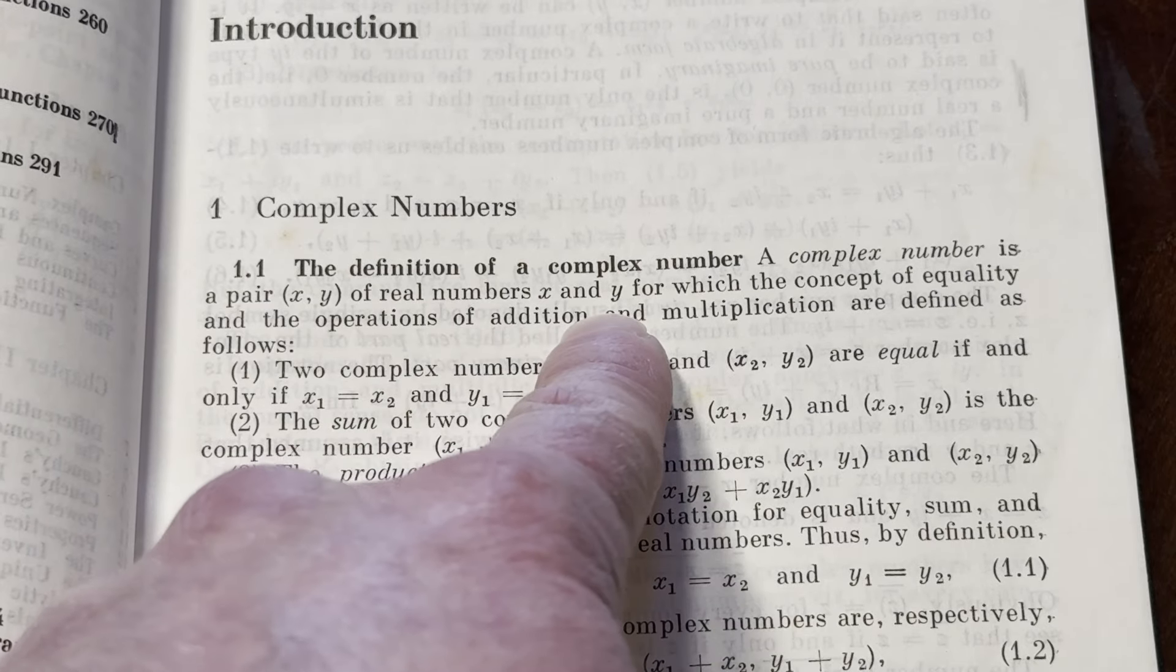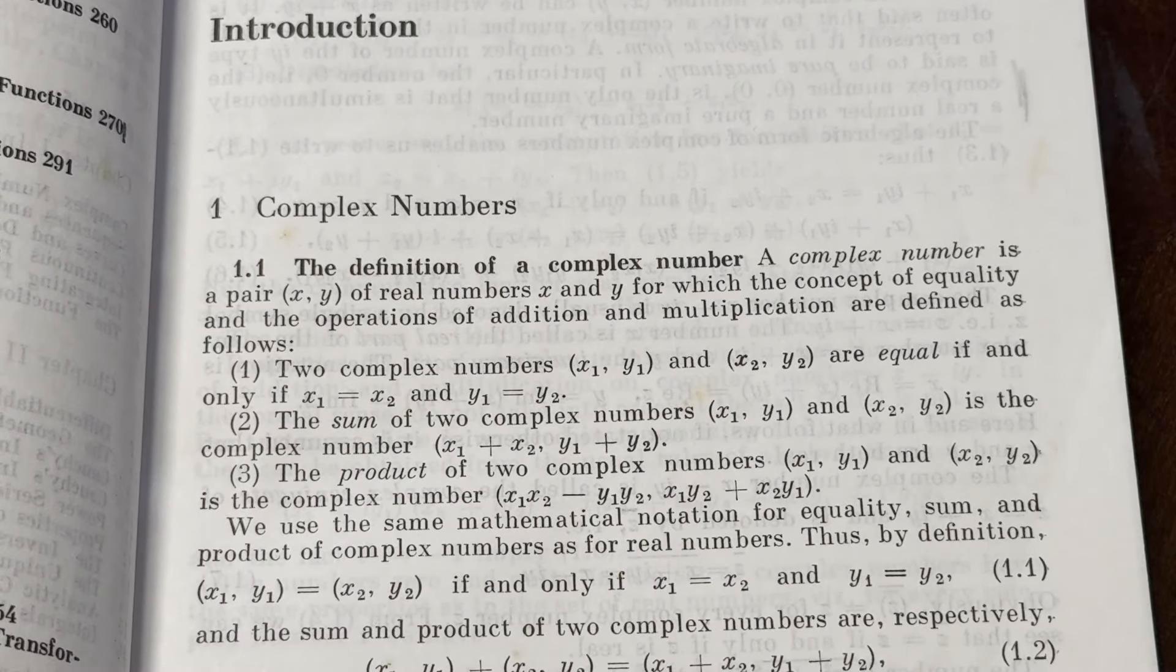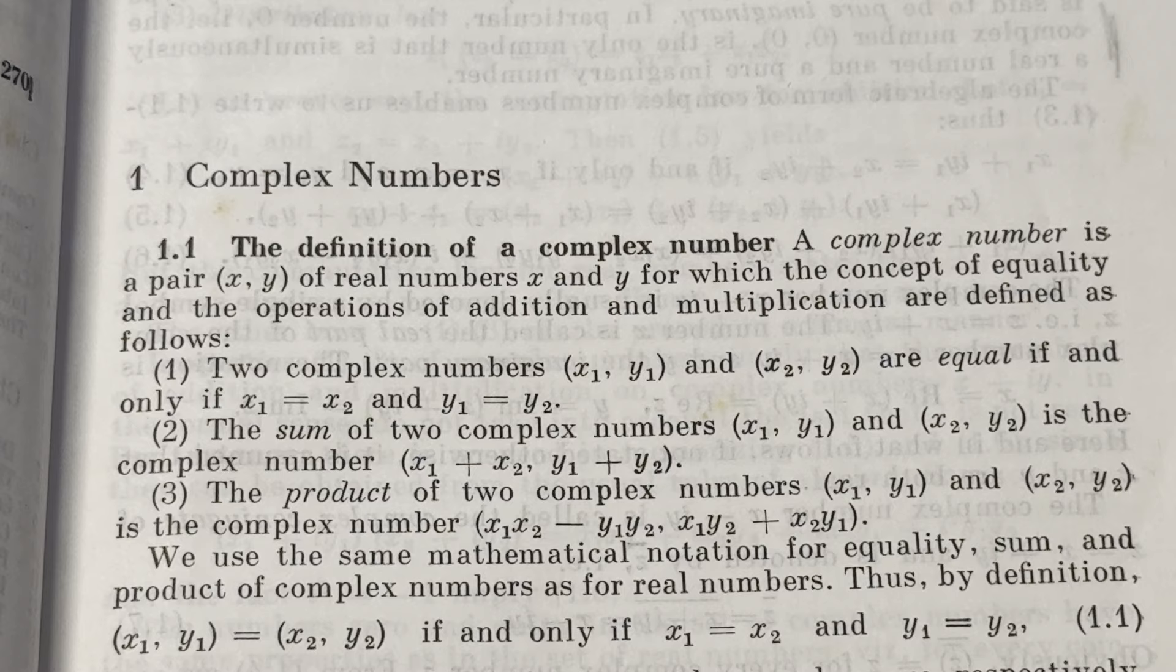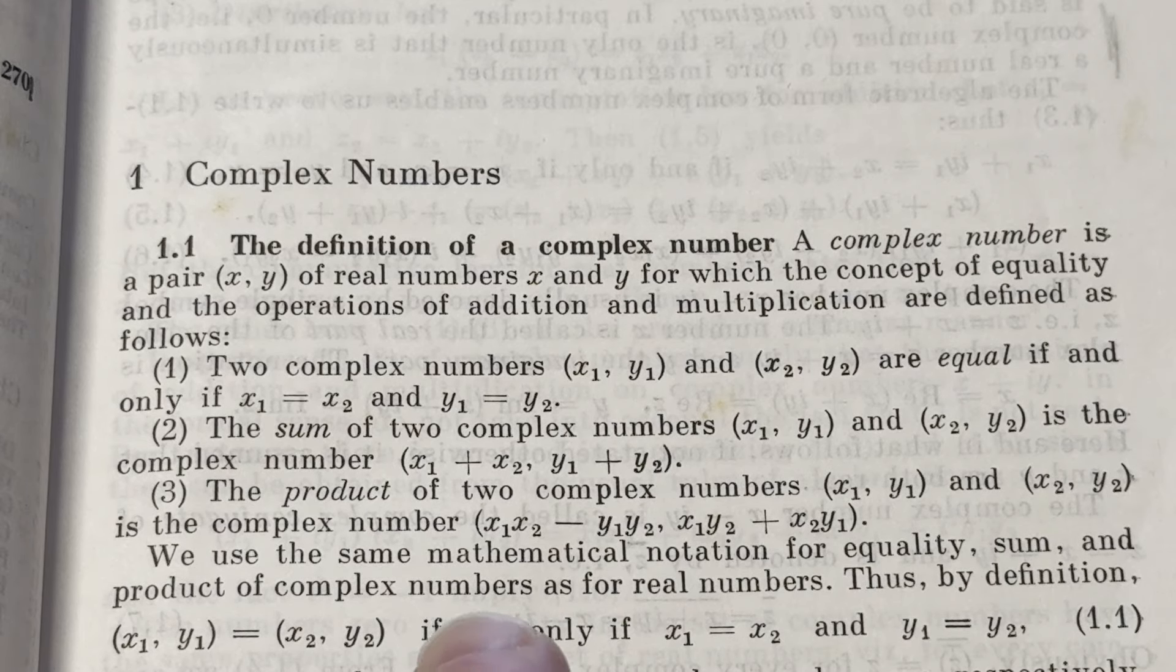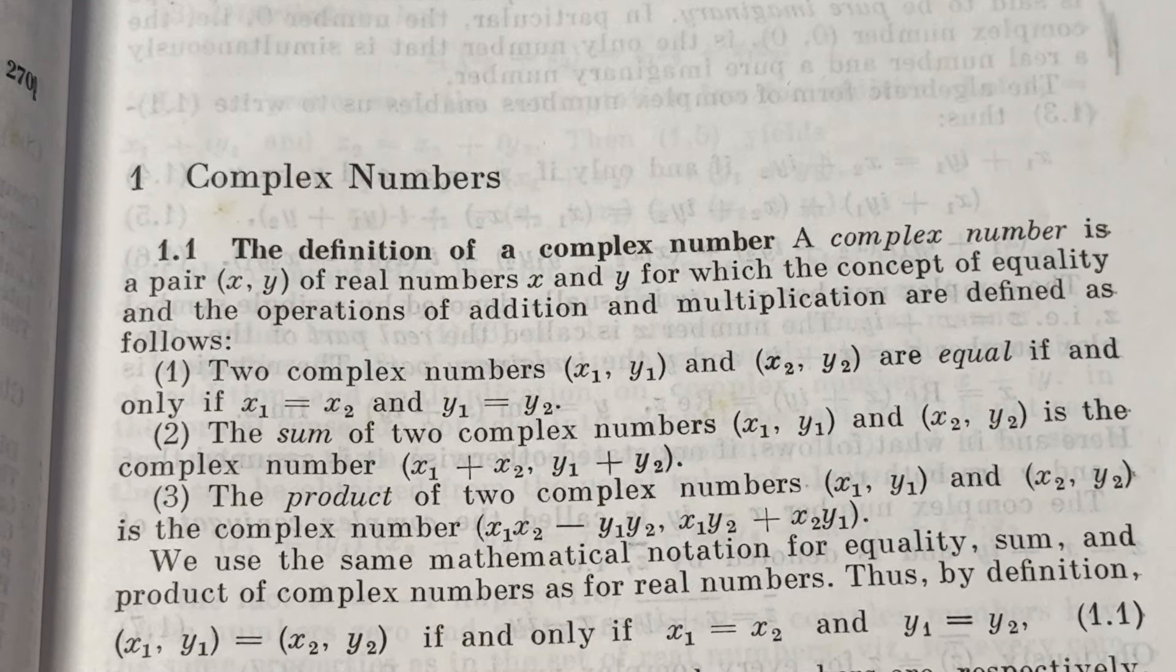A complex number is a pair, (x, y), of real numbers x and y, for which the concept of equality and the operations of addition and multiplication are defined as follows. They define what it means for two complex numbers to be equal.